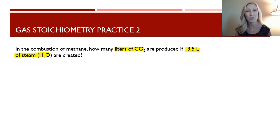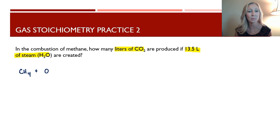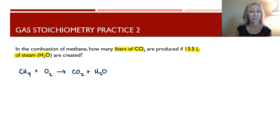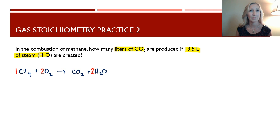We can use the simple coefficient-ratio method. Let's write out the equation: methane is CH₄, it combusts in the presence of O₂, and produces CO₂ and water as products. To balance it, starting with one molecule of CH₄, we need two molecules of water to balance the hydrogens, and then a 2 in front of oxygen. I'll fill in placeholder coefficients of one to make the ratios easy to detect.